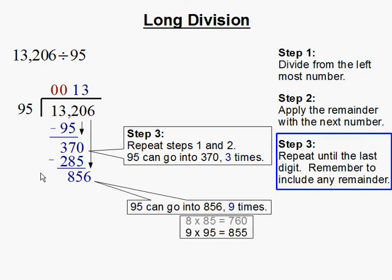Then we ask ourselves, how many times can 95 go into 856? And 95 goes into 856 9 times. 9 times 95 is 855. So we're going to put the 9 on top of the 6.